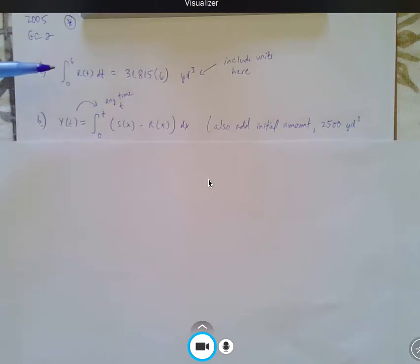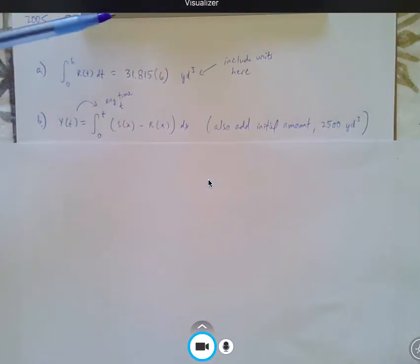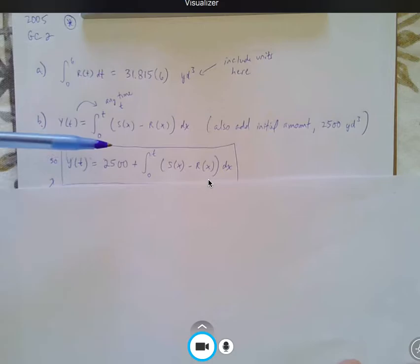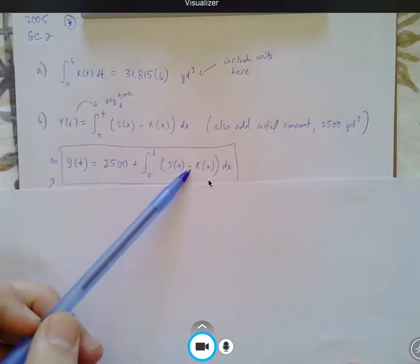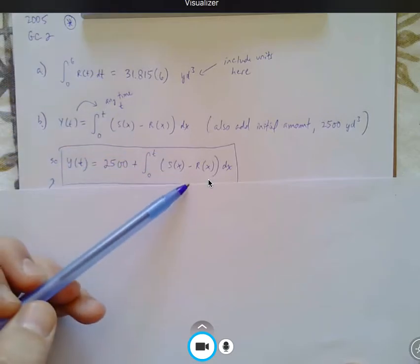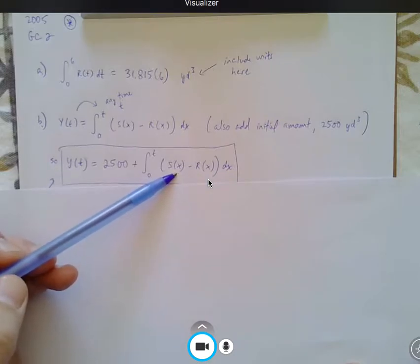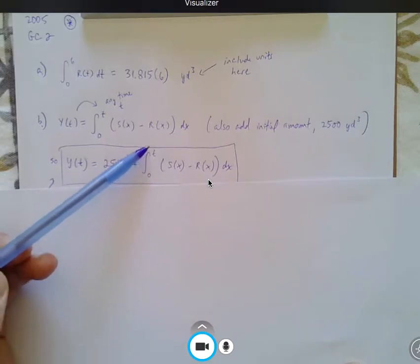Question B is really the fundamental theorem of integral calculus. So, if you can kind of understand this, you'll be fine with this type of question. There's initially 2,500 cubic yards, so you're adding that integral, 2,500 plus the integral from 0 to any time T of the amount of sand being pumped minus the amount of sand being taken away. The key to this problem is knowing that the upper limit is any time T, and inside the integral is S of X minus R of X DX. It's got to be the different variable. And that's essentially the fundamental theorem of integral calculus.